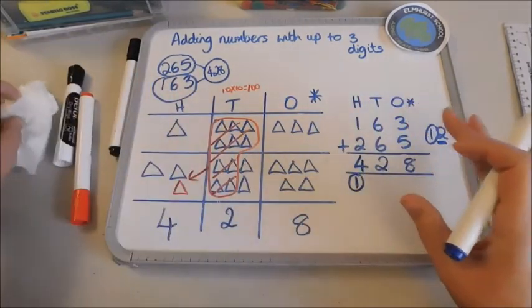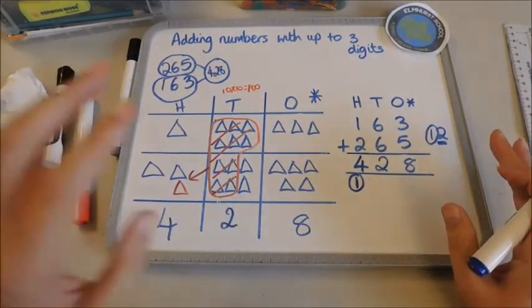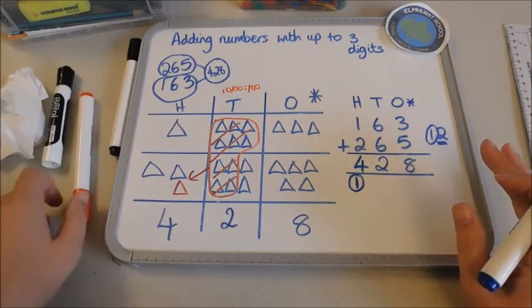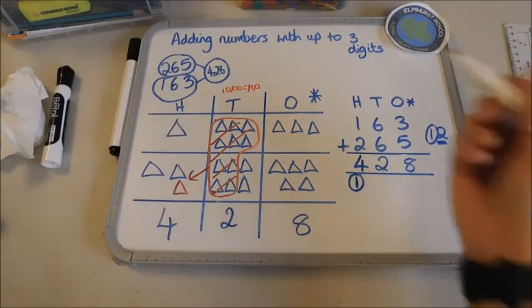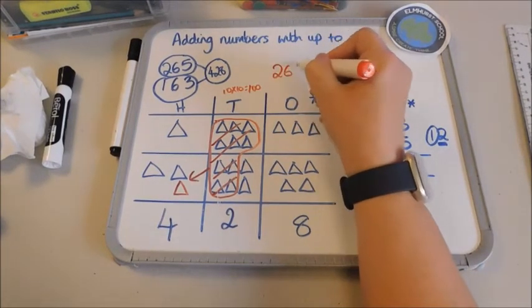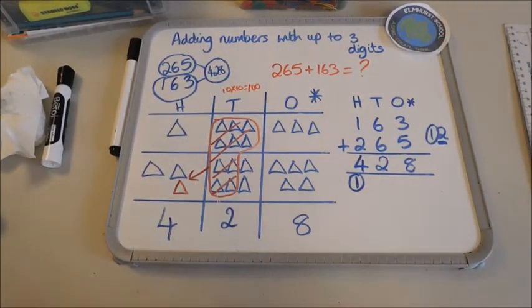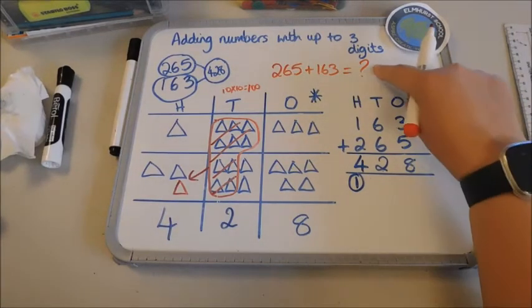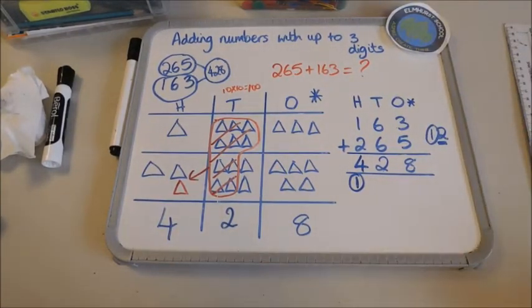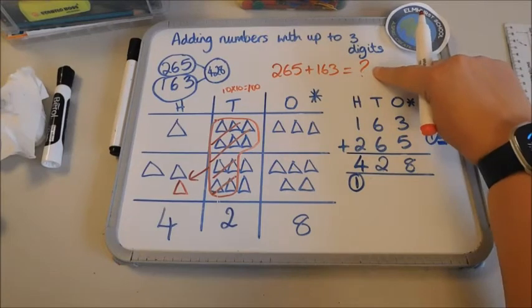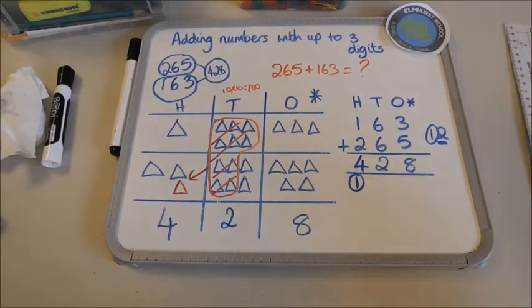Now the other way that children might be shown this calculation is purely written as a number sentence. So they might have 265 add 163 is what. So if they're doing a test or an activity where the teacher has purely written out those questions very quickly they'll see it like this. Now there are some children who think when they see it like this that they just work it out mentally, they do it in their head, and actually that's not the case. It's written like this purely for ease.